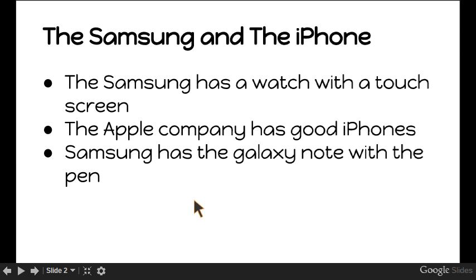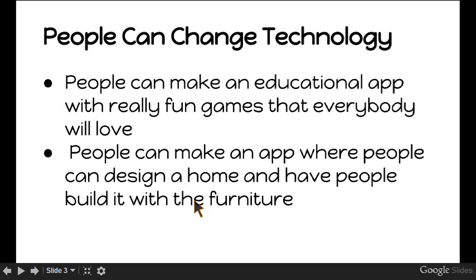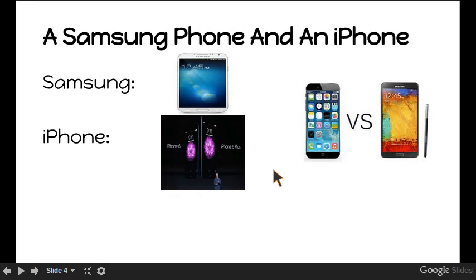The Samsung and the iPhone. The Samsung has a watch with a touchscreen. The Apple Company has good iPhones. Samsung has Galaxy Note. People can change technology. People can make fun educational apps with really fun games that people will love. People can make an app where everybody can design a home and build a Samsung and an iPhone.